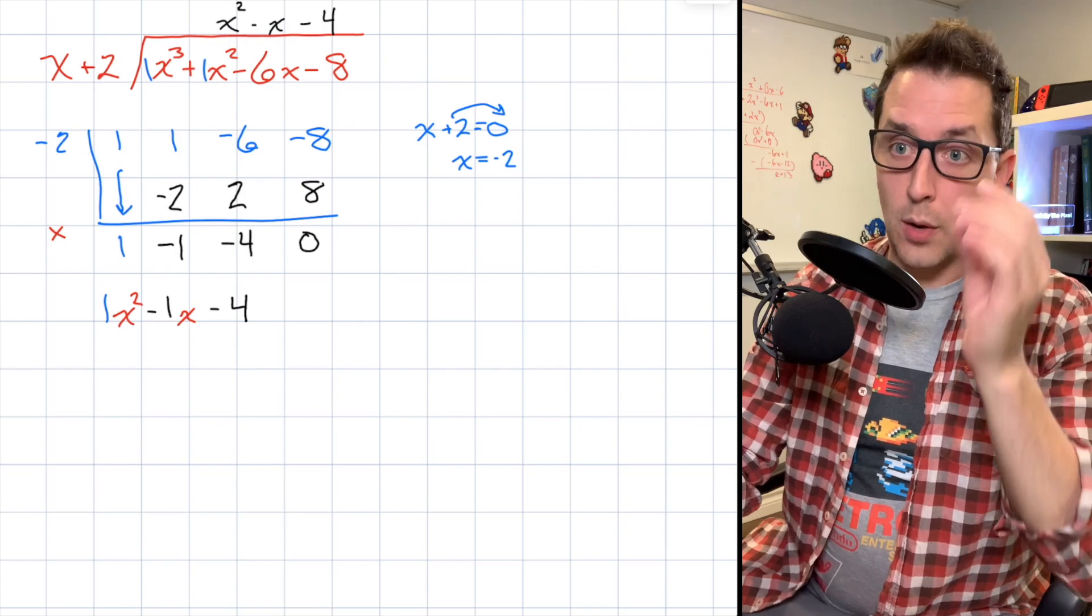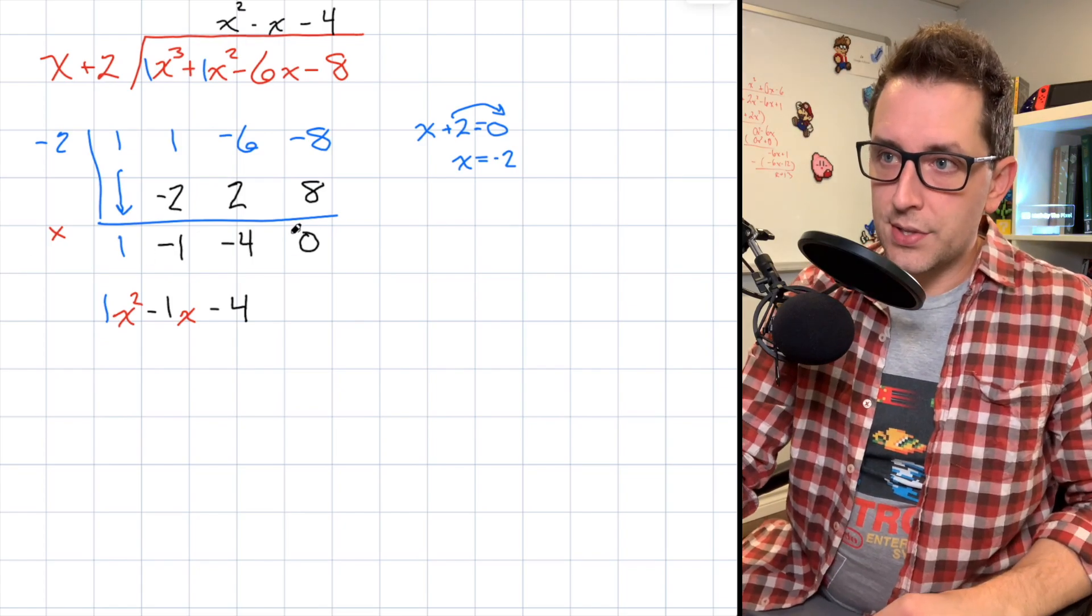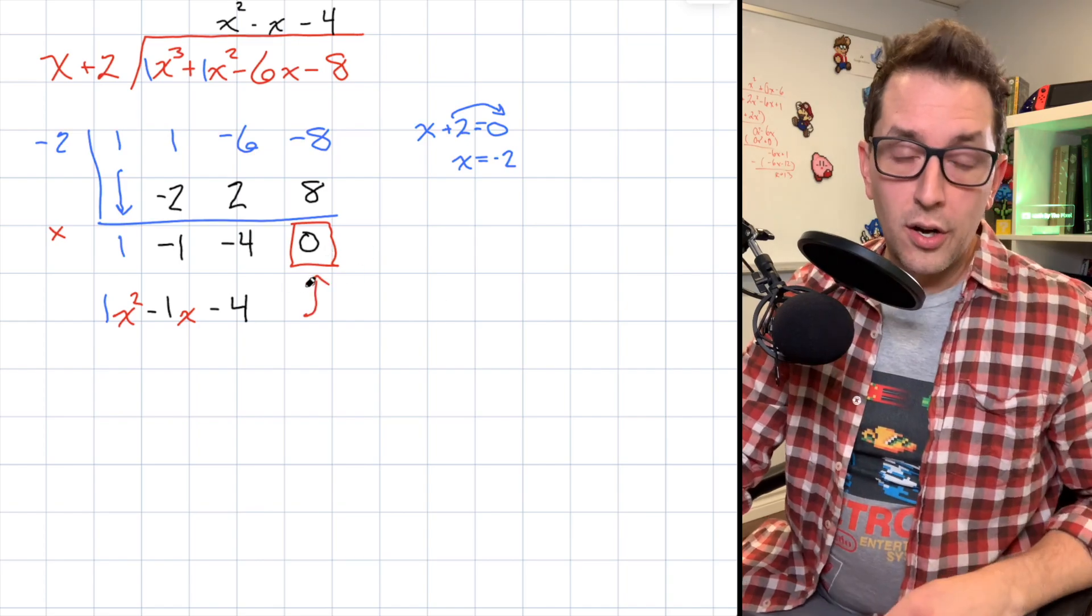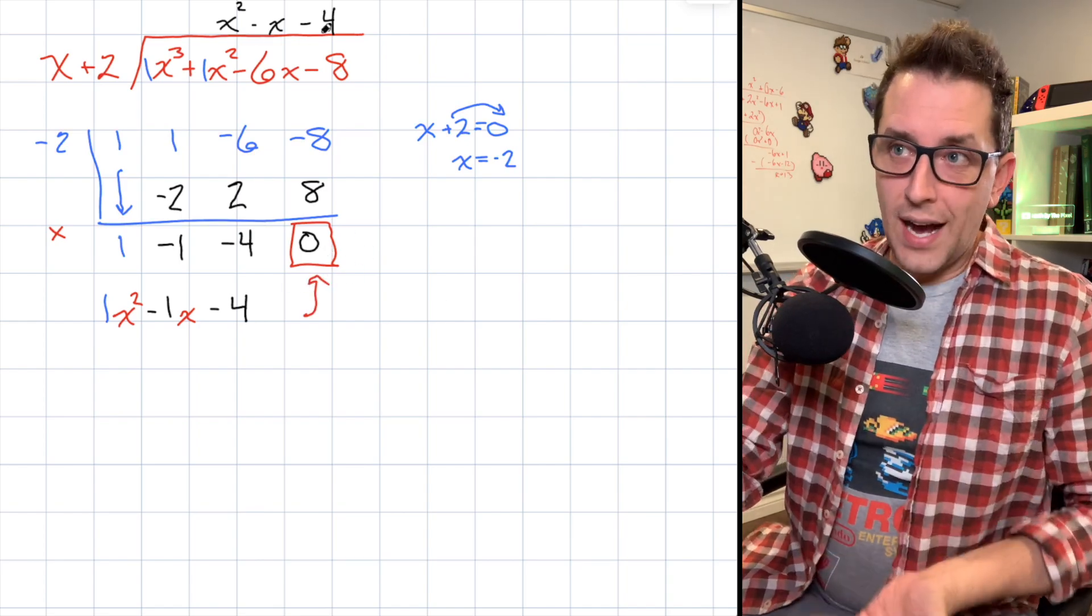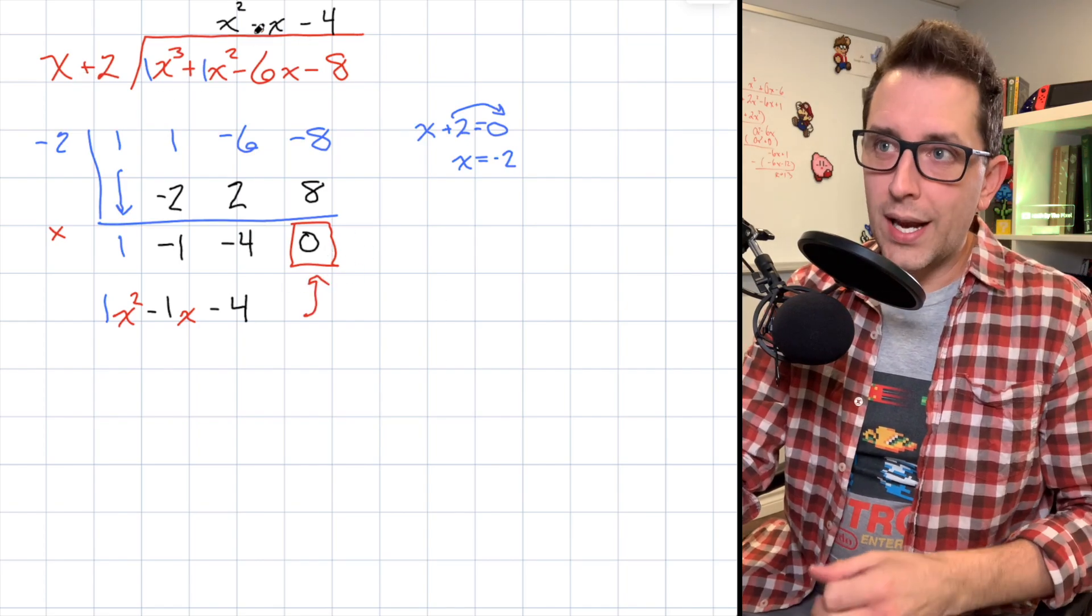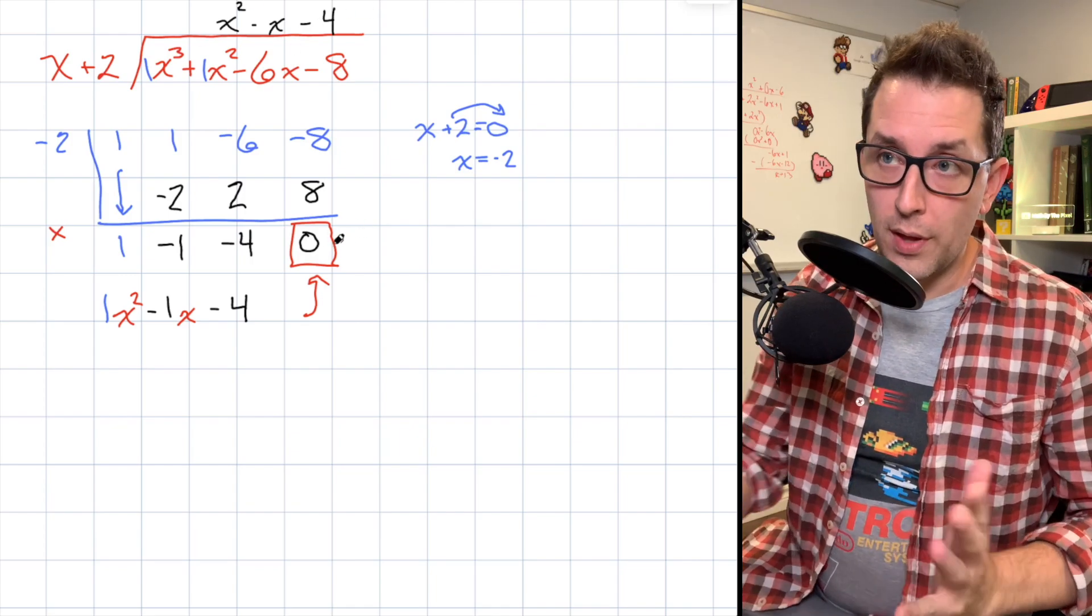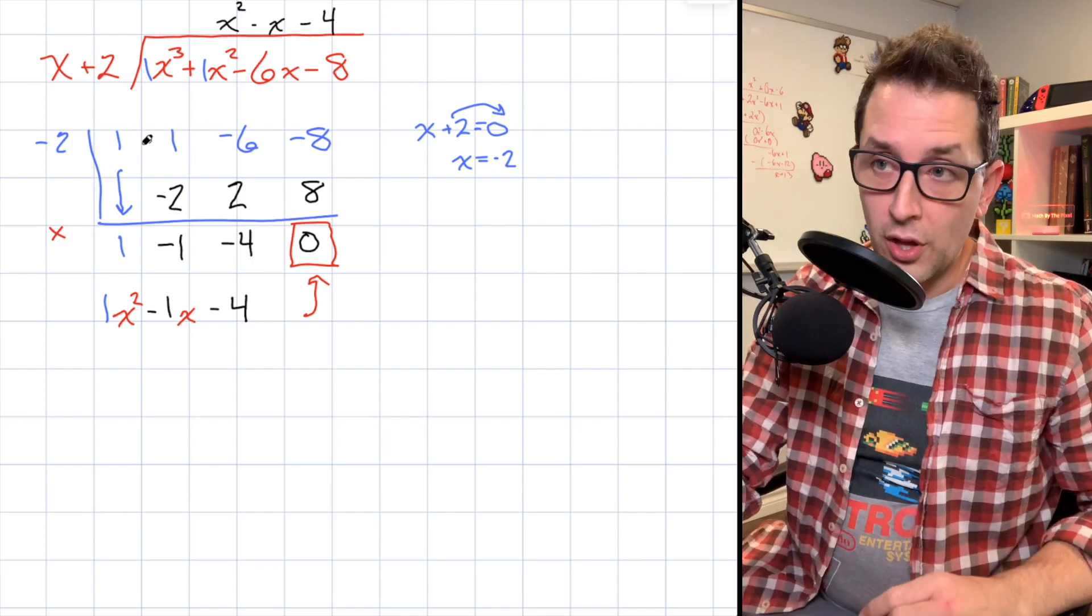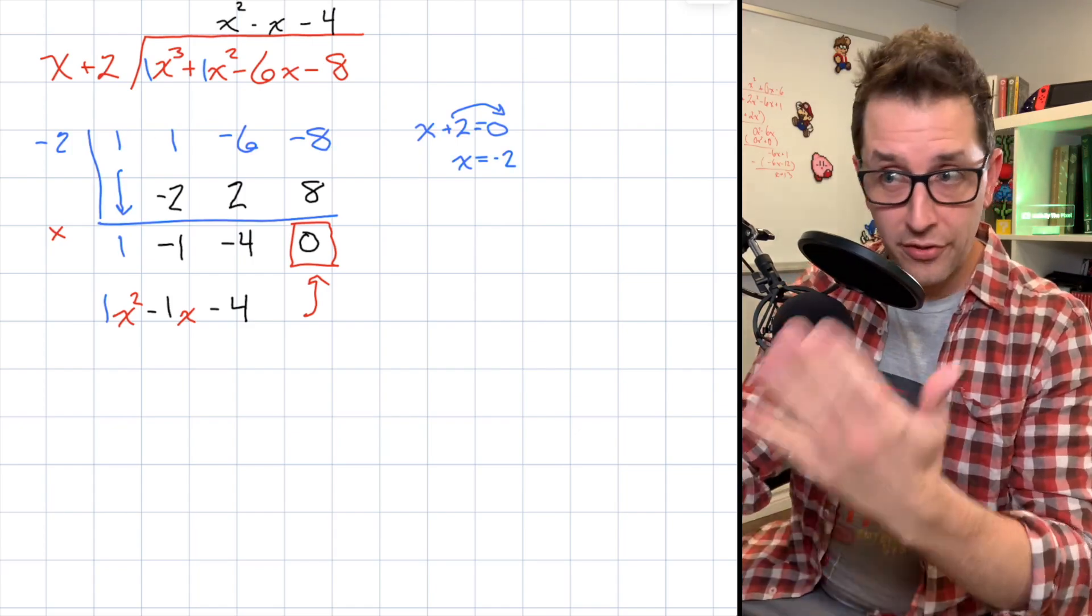Now, one key piece of information that I want to draw your attention to here is this zero. This is a really special zero. This right here is our remainder. When we divided this polynomial by this binomial, we got a nice trinomial with a remainder of zero. And that's because x+2 divides nicely into that polynomial.